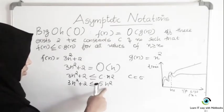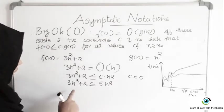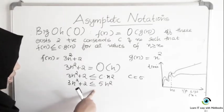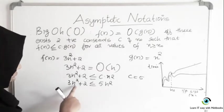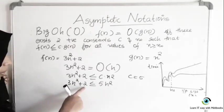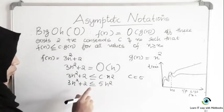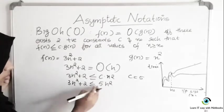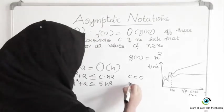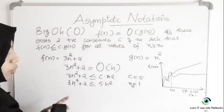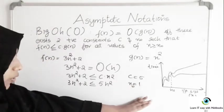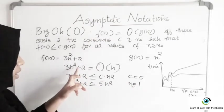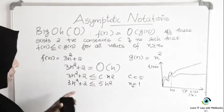When N equals 1, both sides are equal — this is 3 plus 2 equals 5 and the right side is 5. When N equals 2, the left is 12 plus 2 equals 14 and the right is 5 times 4 equals 20, so the left is always smaller than the right. So N0 equals 1, and for all values of N greater than or equal to 1 with C equals 5 this inequality holds. I can say that 3N square plus 2 is Big O of N square.